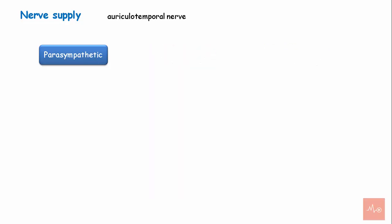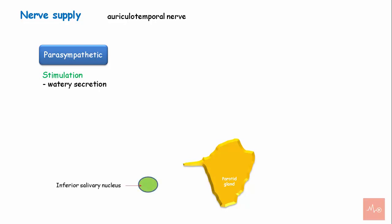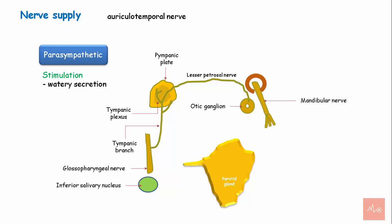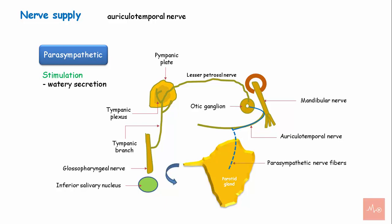The parasympathetic nerves reach the gland through the auriculotemporal nerve and are secretomotor. On stimulation, the gland produces watery secretions. The preganglionic fibers arise in the medulla, pass through the glossopharyngeal nerve, its tympanic branch, the tympanic plexus, and the lesser petrosal nerve, and relay in the otic ganglion. The postganglionic fibers arise from the otic ganglion and pass through the auriculotemporal nerve, a branch of the mandibular nerve, to reach the parotid gland.